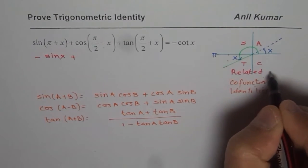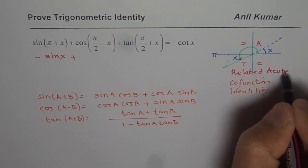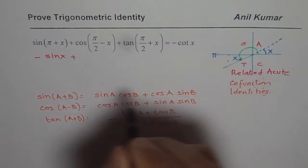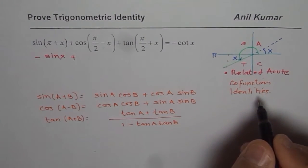So, that is we are writing in terms of related angle. Related acute angle, I should say. Co-function is pi by 2. So, first one we did with the help of related acute angle.